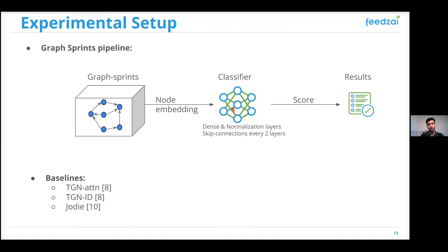We compare against three state-of-the-art graph neural networks, namely TGN attention and TGN-ID and JOLIE.